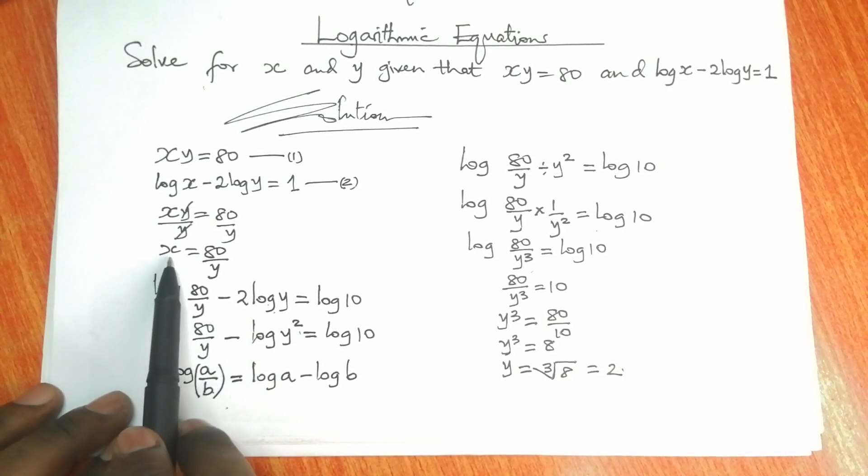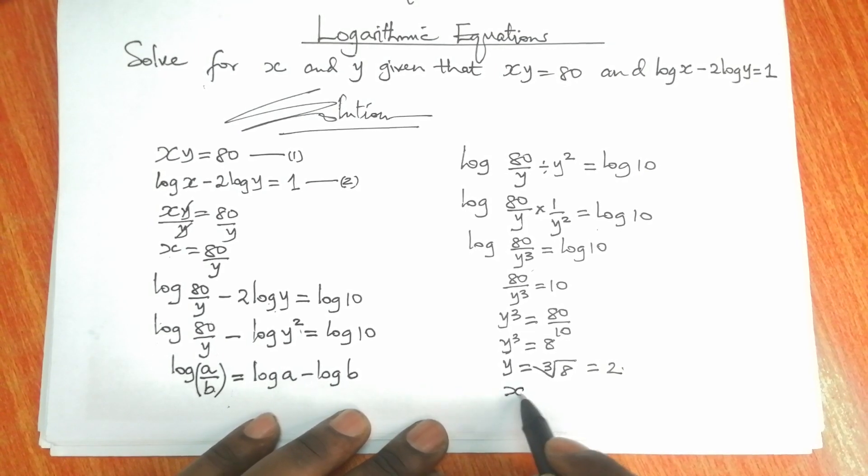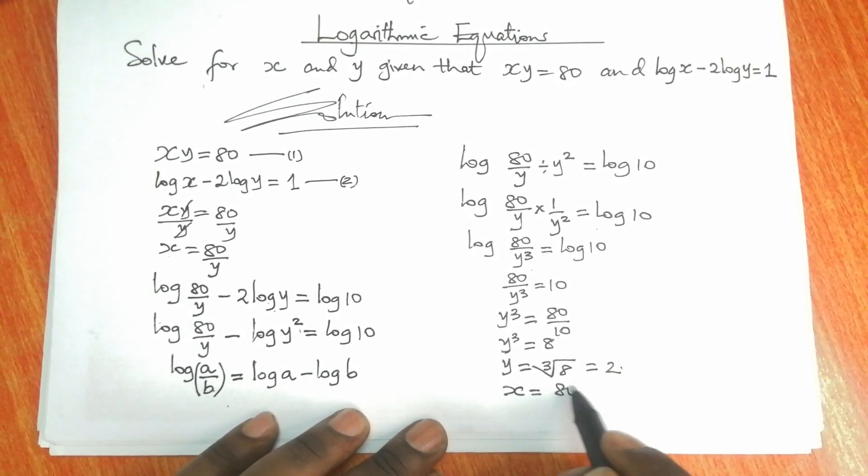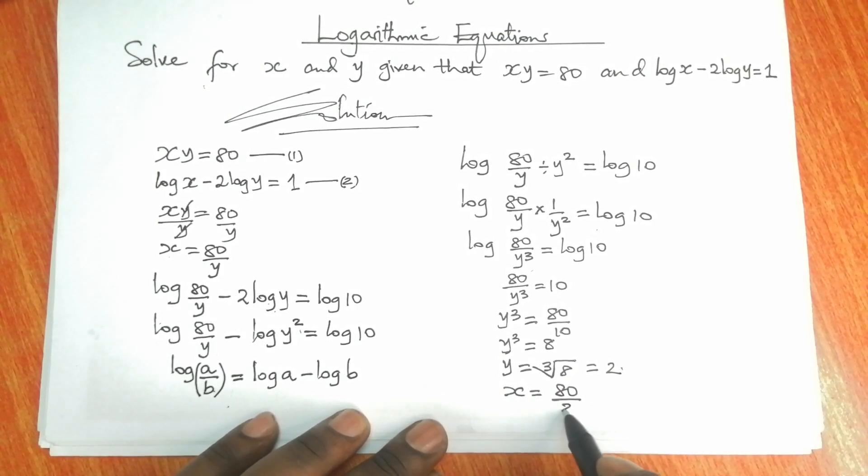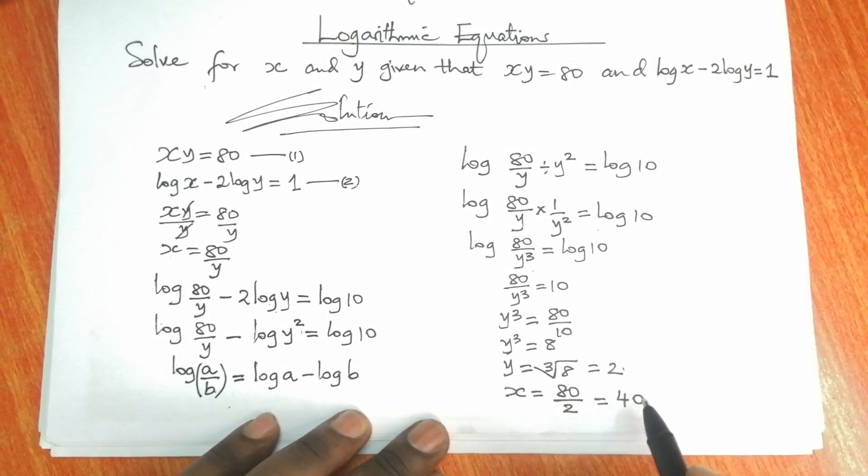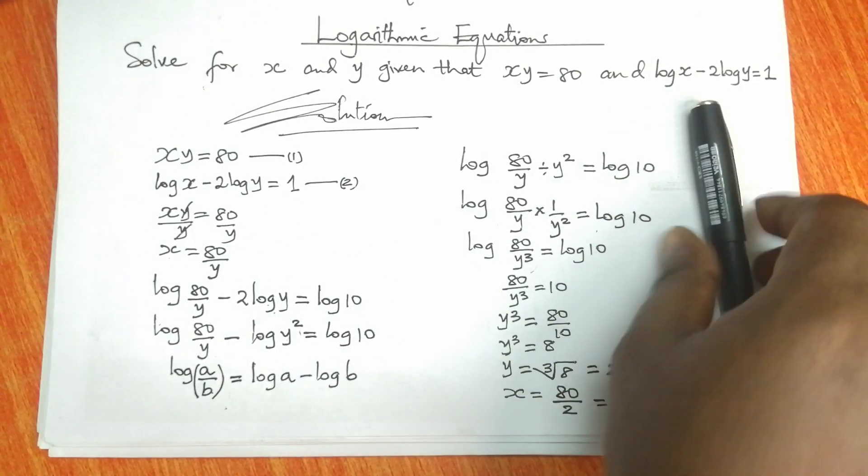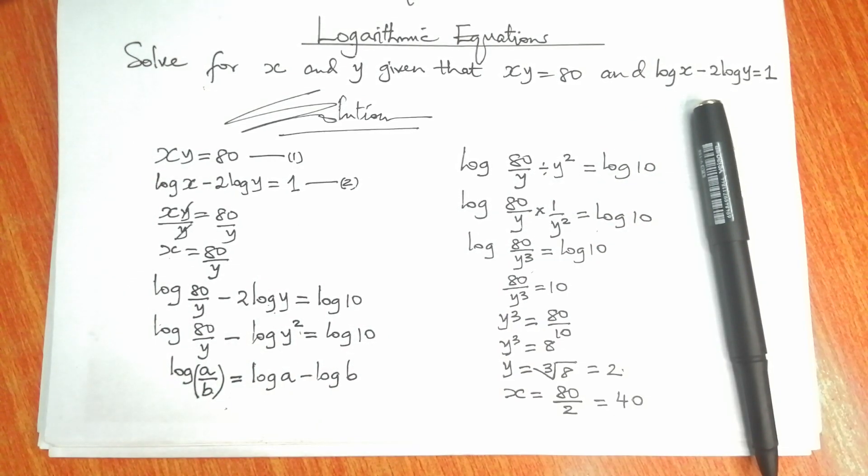And since we have got the value of y, we can now find the value of x. Since we know that x is 80 divided by y, therefore x will be equal to 80 divided by 2, which is equal to 40. And those are the solutions to this question: x will be 40 and y will be 2.